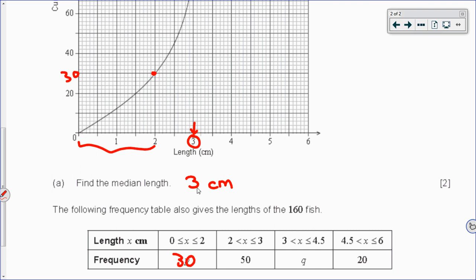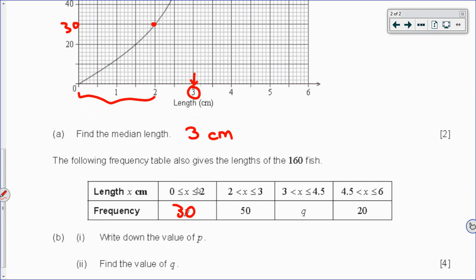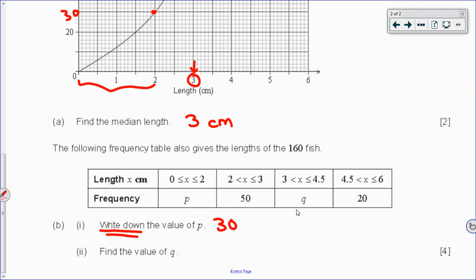Then to figure out Q, which I assume if I scroll down is what this question is asking. Yes, indeed. So the value of P we just found. And remember that when the command is write down, the picture or the information that's given in the question should be enough to just answer it without showing any work. But a find the value question like in B2 typically requires that some work is shown if you can find any work to show.